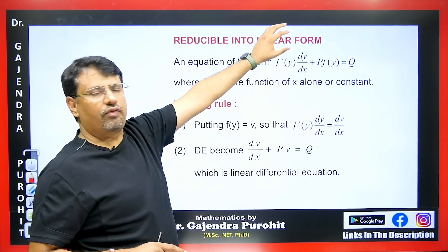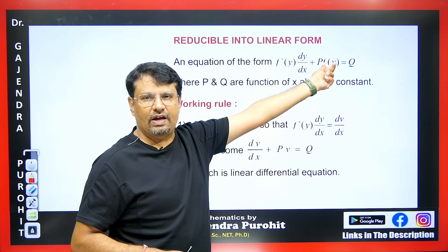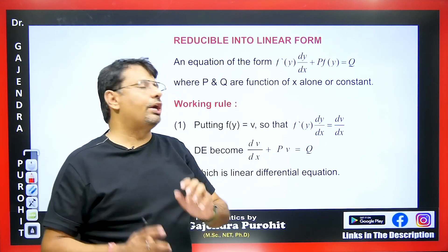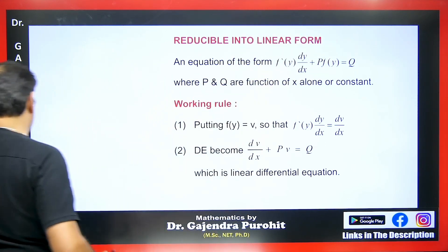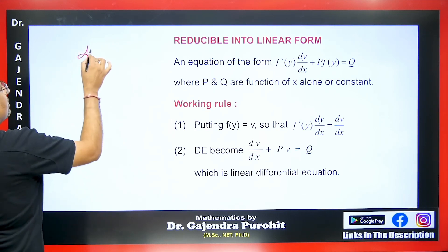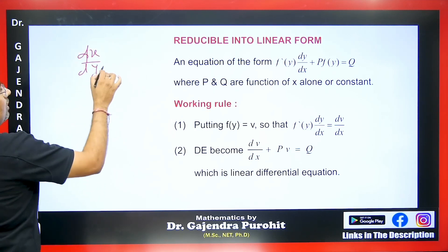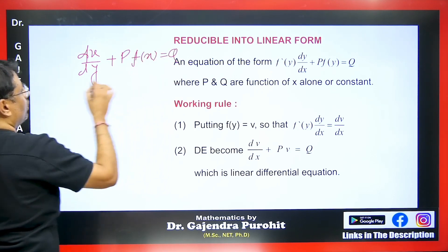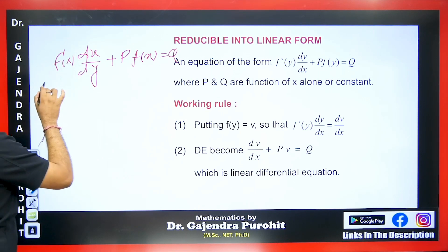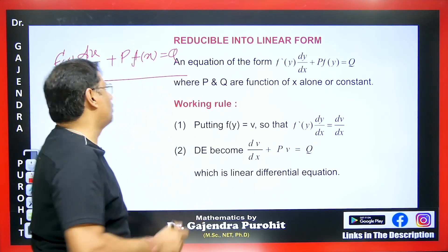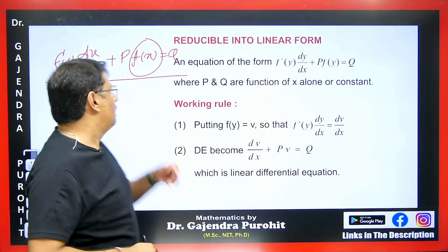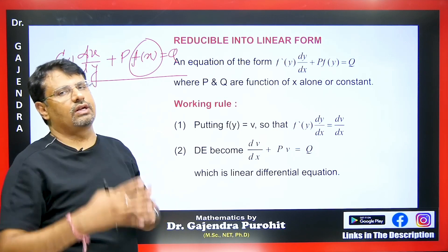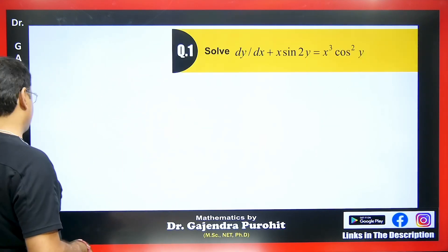The first form of a reducible to linear equation is: if we have a function F(Y) and its derivative, and dy/dx with P and Q given, then this equation is reducible to linear in Y. Similarly, if we have dx/dy plus P times a function of X equals Q, and its derivative appears here, we can reduce this to linear. Just consider the function equal to V, and the term in front becomes dV/dy. We will get this as linear in V.